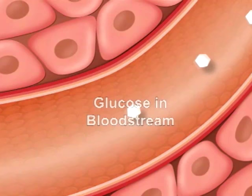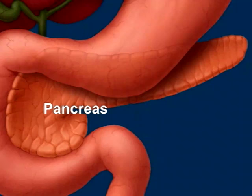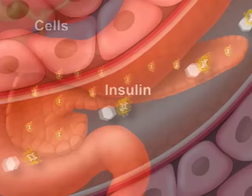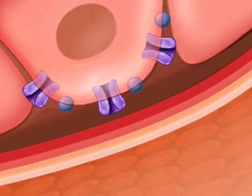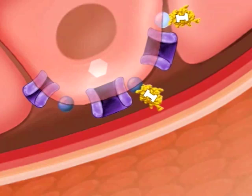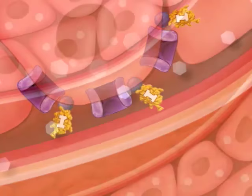Your pancreas responds to the glucose by releasing insulin. Insulin is responsible for allowing glucose into your body's cells. When the glucose enters your cells, the amount of glucose in your bloodstream falls.